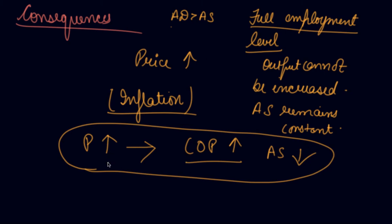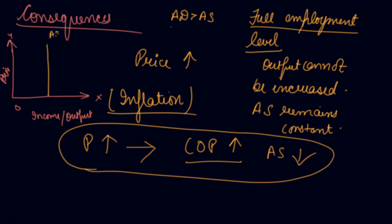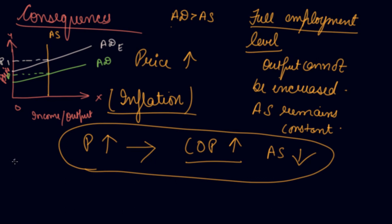Now let's see how this happens graphically. Here you take your income or output on one axis and the price of a good on the other. Your aggregate supply will be constant — there will be no change in your aggregate supply. This is your aggregate demand. Your price is P. Now if your aggregate demand increases from its full employment level, that is ADE, what happens? Your price increases from P to P1. So there is an increase in price.